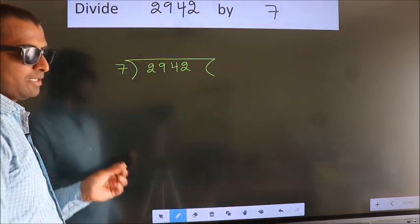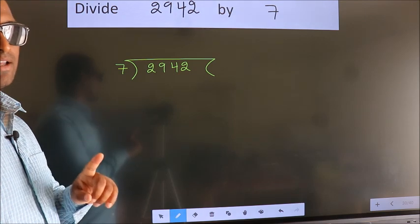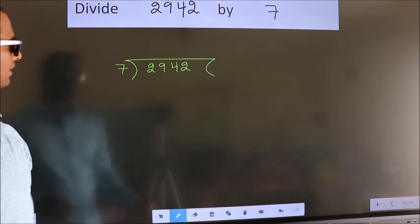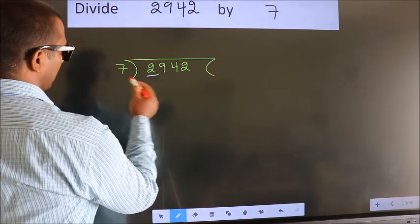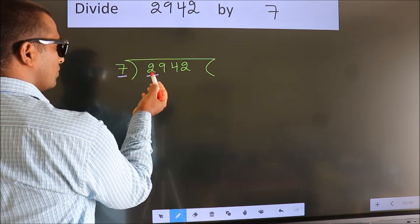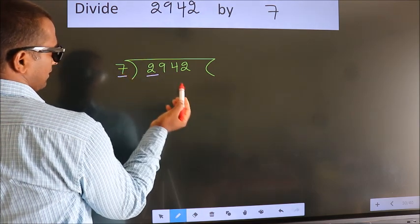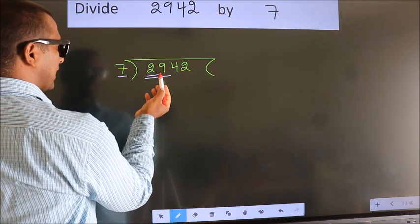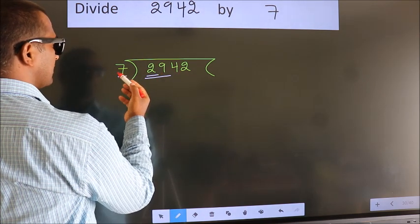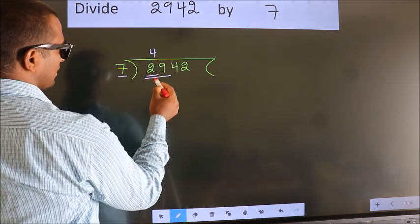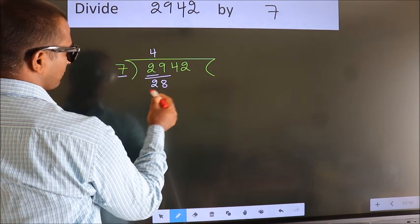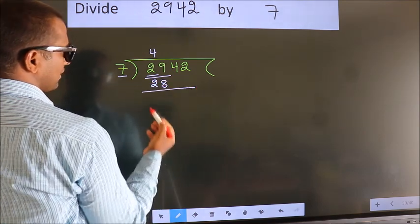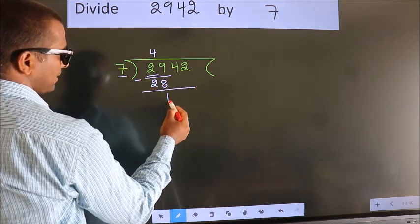This is your step 1. Next, here we have 2. Here 7. 2 smaller than 7, so we should take 2 numbers. 29. A number close to 29 in 7 table is 7 fours 28. Now we should subtract. We get 1.